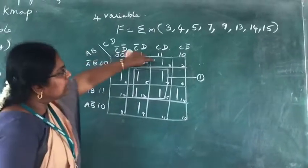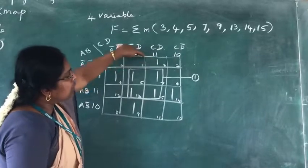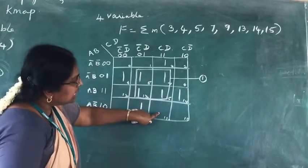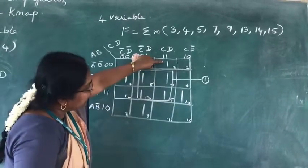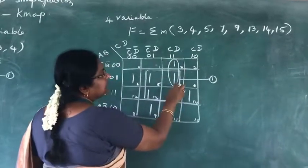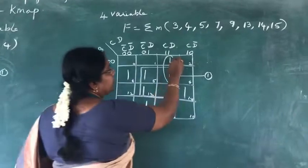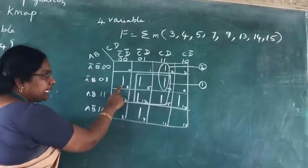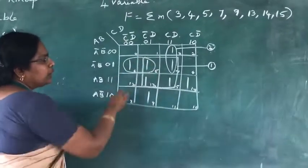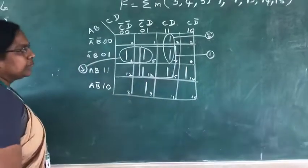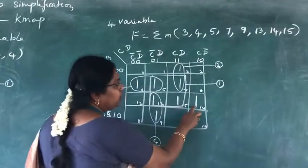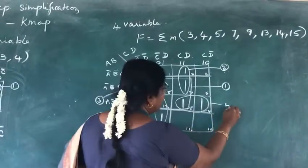For the remaining min terms: min term 3 is not adjacent to cells 1, 2, or 11, but is adjacent to cell 7, so we group 3 and 7 as group number 2. Min term 4 is adjacent only to min term 5, forming group number 3. Min term 9 is adjacent only to min term 13, forming group number 4. Min term 14 is adjacent to 15, forming group number 5.